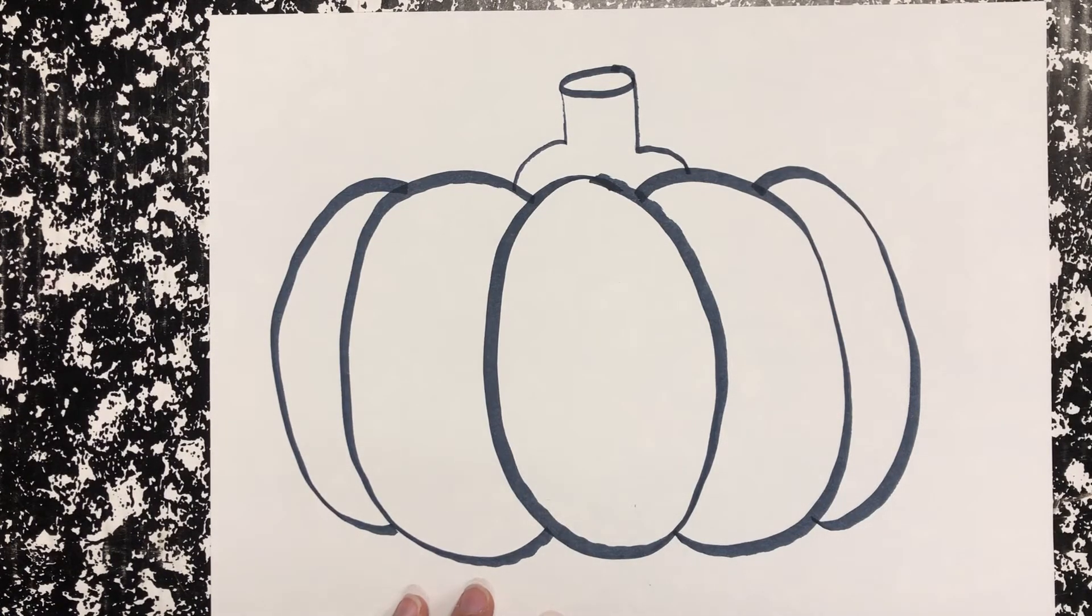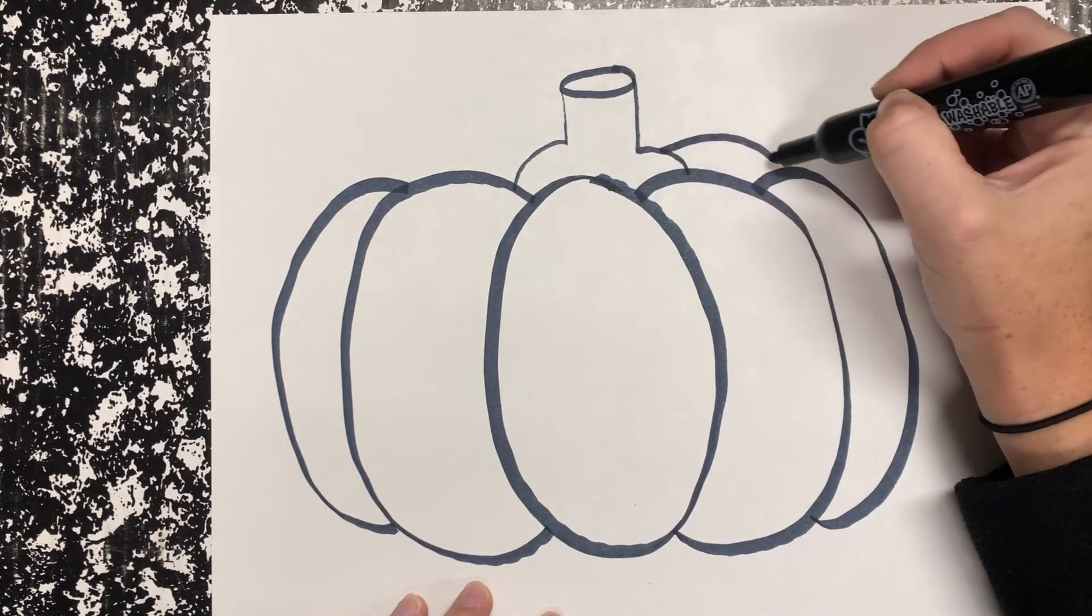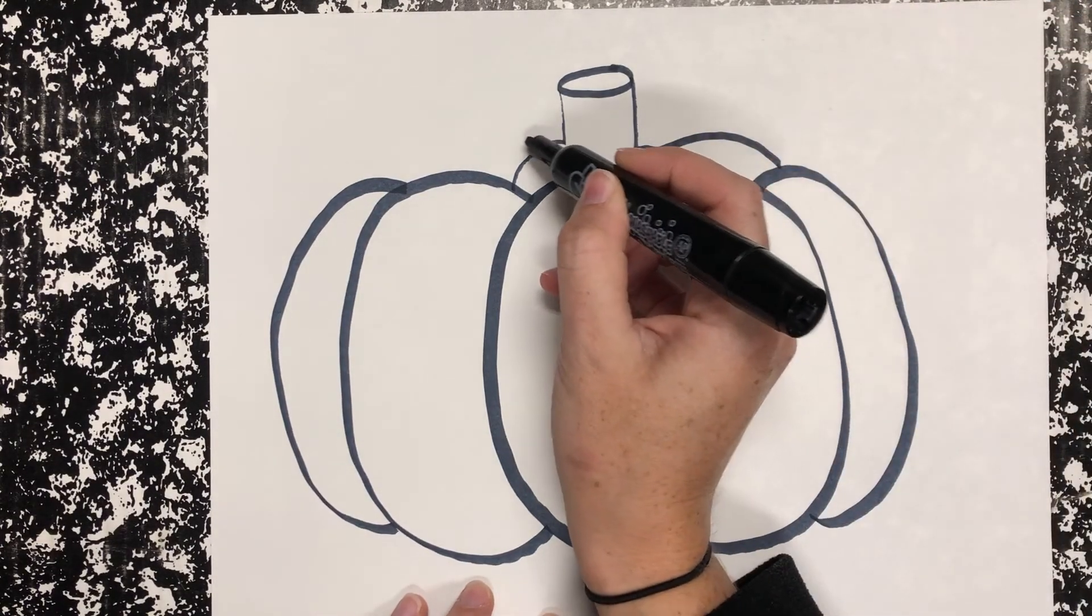If you'd like, you can add some little hills in the back. One. Two.